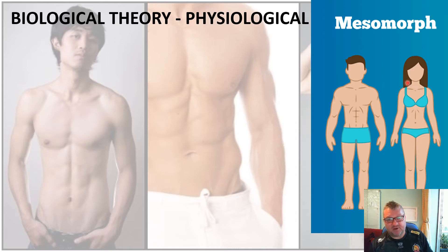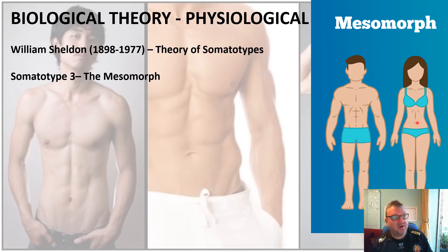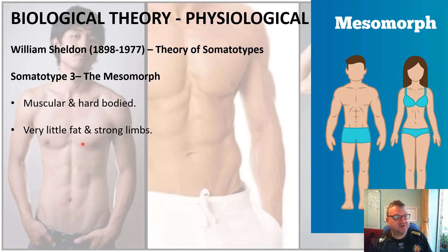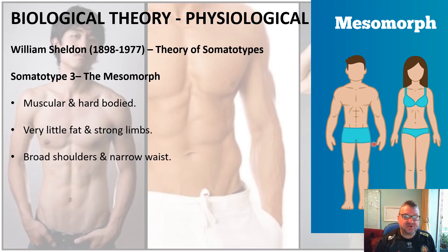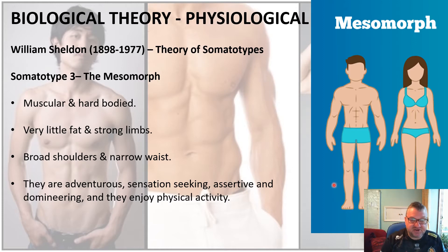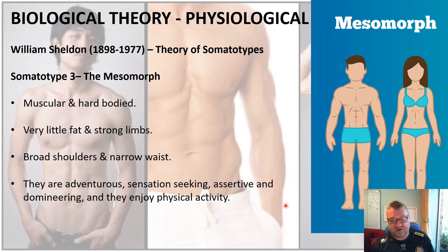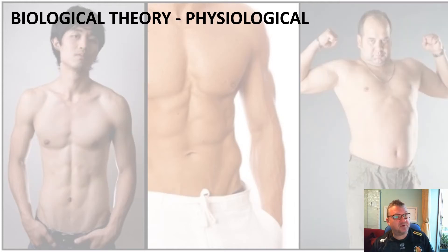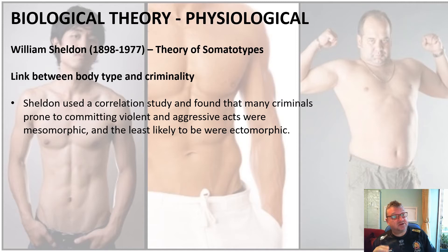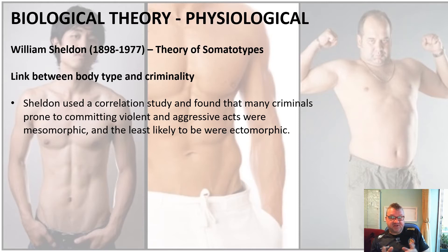His final somatotype was the mesomorph. Mesomorphs are muscular and hard-bodied, with very little fat, strong limbs, broad shoulders and narrow waists. They are adventurous, sensation-seeking, assertive and domineering, and they enjoy physical activity. Sheldon used a correlation study and found that many criminals prone to committing violent and aggressive acts were mesomorphs.